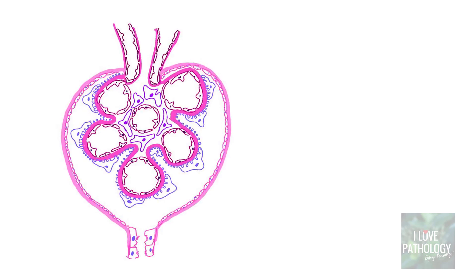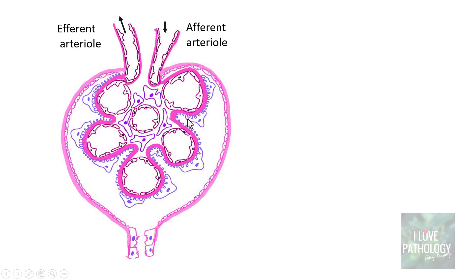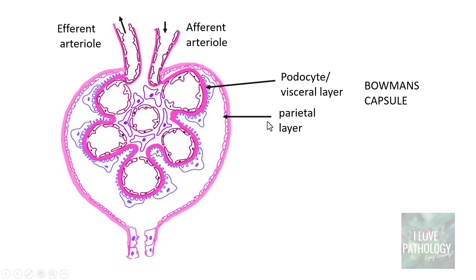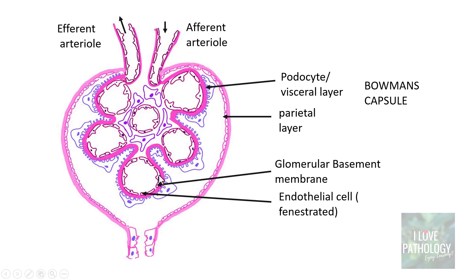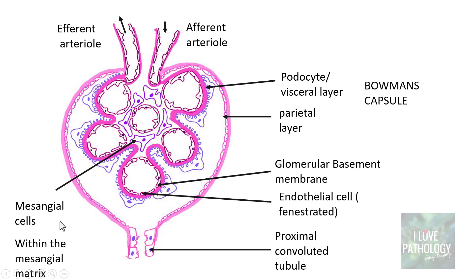This is the schematic diagram of glomeruli. Basically the glomeruli is composed of tufts of capillaries surrounded by a common capsule and this is the place where the filtration of blood takes place. The efferent arterioles carries the blood into the glomeruli and then the efferent arterioles takes away the filtered blood. This Bowman's capsule is made up of an outer parietal layer and inner visceral layer which are lined by podocytes. These capillaries are lined by endothelial cells, which are fenestrated. In between the endothelial cell and the podocytes is the glomerular basement membrane. Apart from these cells you also have mesangial cells within the mesangial matrix.